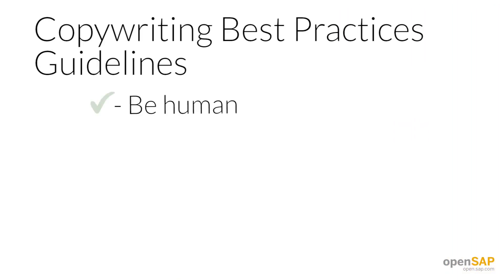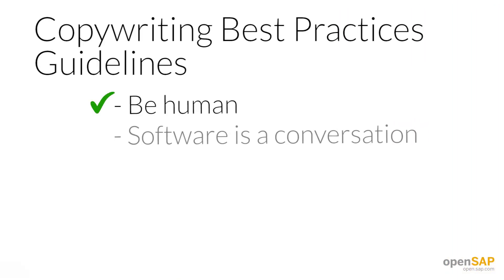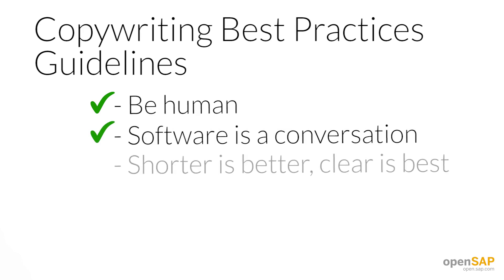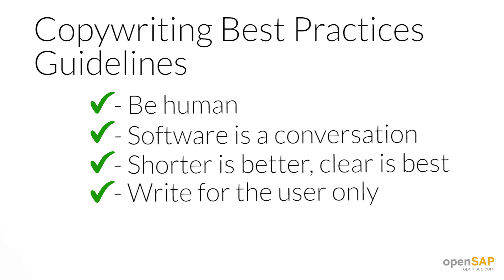In this class, I'll continue to run through some copywriting best practice guidelines. Let's quickly recap the guidelines from the last class: be human, remember that software is a conversation, shorter is better, clear is best, and write for the user only.